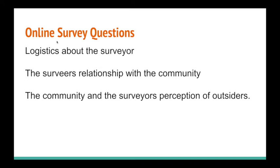Our survey questions can be split into three groups. The first are questions about the speaker — basic facts like how old are they and where do they live. The second group covers the surveyor's relationship with the community, such as whether they feel like a member of that community. The last set of questions are about how the community relates to outsiders — for example, one question asks respondents to rank on a scale of one (hard) to five (easy) how identifiable outsiders are.